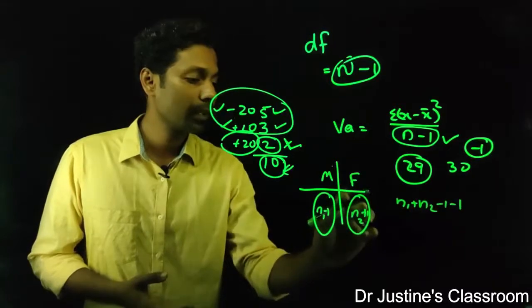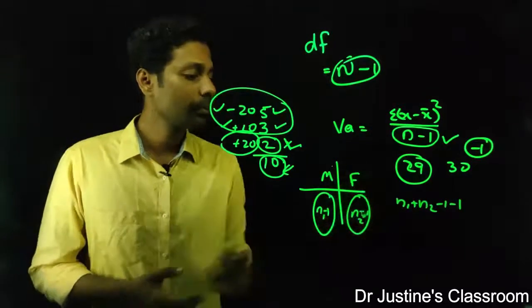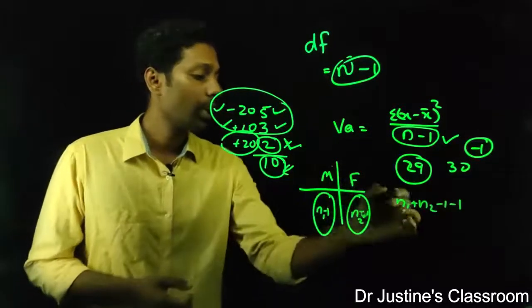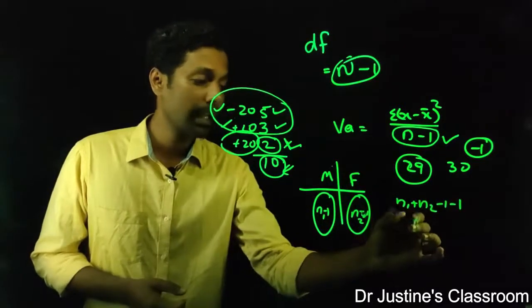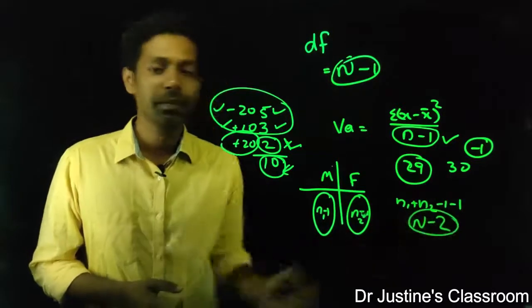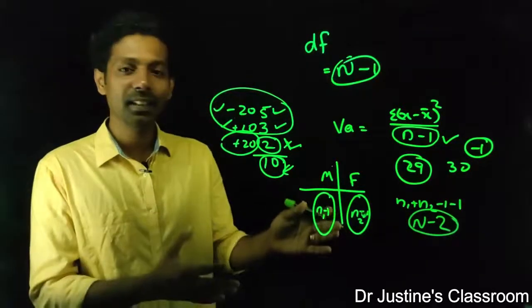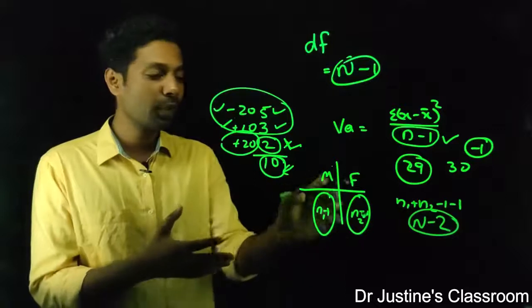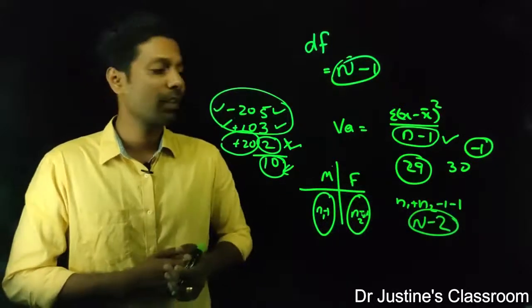n1 minus 1 and n2 minus 1. This is n1 plus n2, total n, minus 2. This is the degree of freedom. So fundamentally this is n minus 1. You have two values here, you get a degree of freedom 2 in this context.